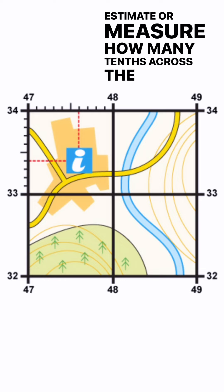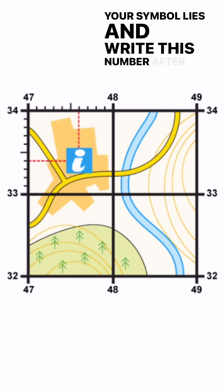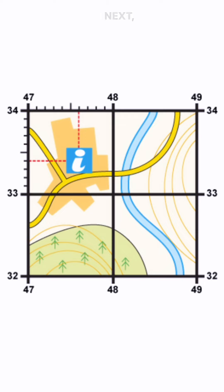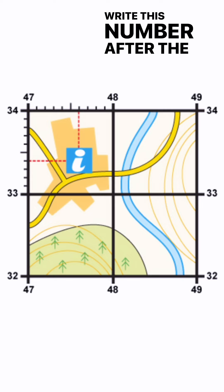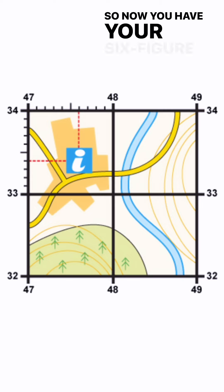Estimate or measure how many tenths across the grid square your symbol lies and write this number after the first two digits. Next estimate how many tenths up the grid square your symbol lies. Write this number after the last two digits. So now you have your six-figure grid reference. In this instance, the tourist information office is located at 476334.